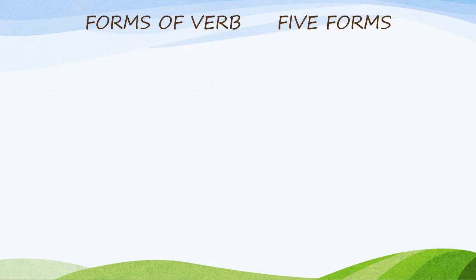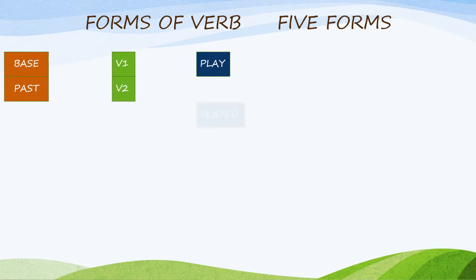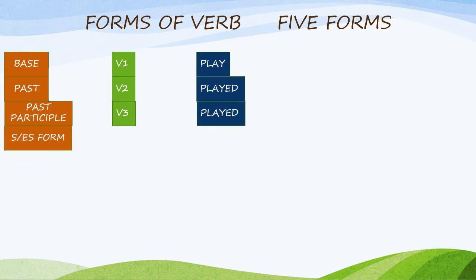Forms of verb — there are five forms. First, base form, that is V1. For example, play — that is the first form. Then past, V2 form: played. Then third, past participle, V3 form: played. Fourth, S or ES form: plays.